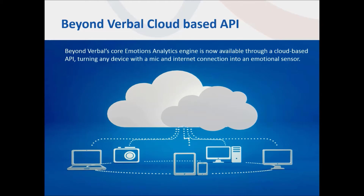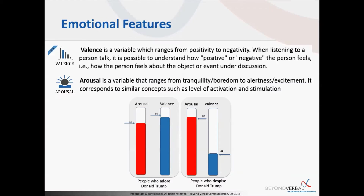The first two emotional features I want to talk about are called valence and arousal. Both are measured on a score of 0 to 100. Valence measures how positive or negative a respondent or user is — a score of 0 means very negative, whereas a score of 100 means very positive.